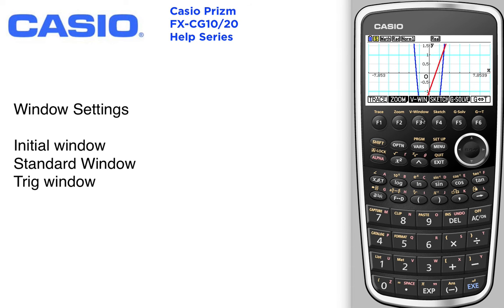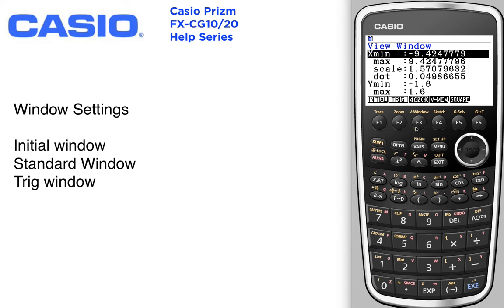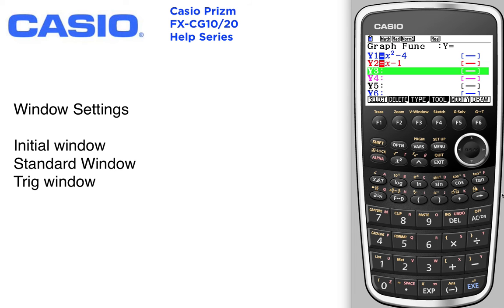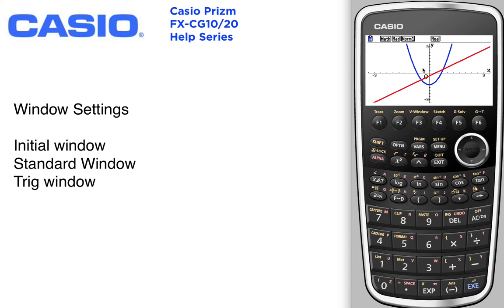Another one is your standard window, which is your 10 by 10 window. Although it does distort, it gives you a window that's 10 by 10. The screen looks contorted or distorted because of it.